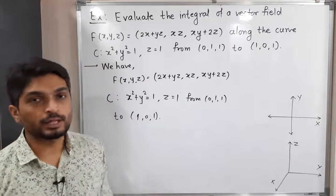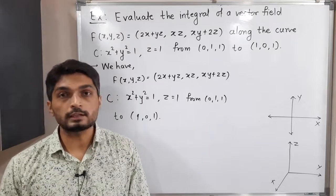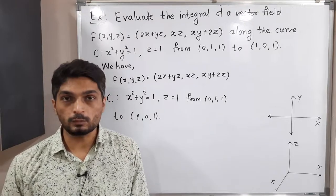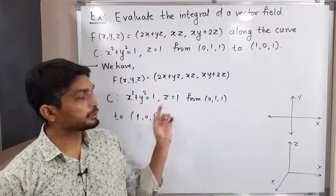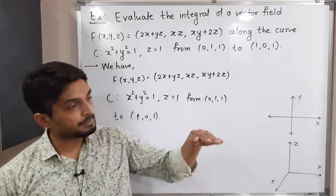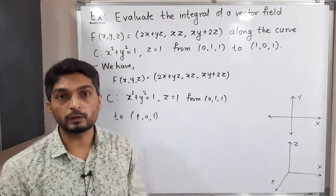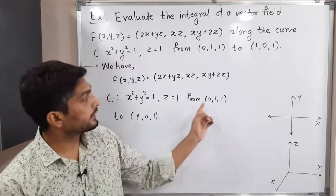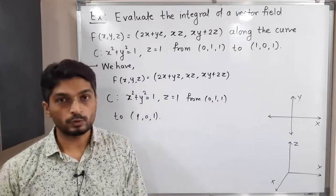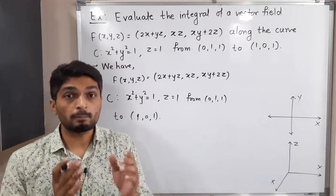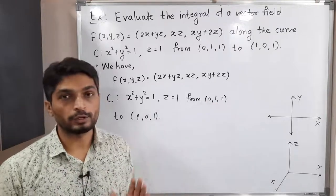C is defined in this way: x squared plus y squared is equal to 1. You know that this is an equation of a circle with center (0,0) and radius 1. They have also mentioned z is equal to 1, which means at the height z=1 we will have some part of a circle. It goes from (0,1,1) to (1,0,1), so we have a part of a circle from this point to this point.